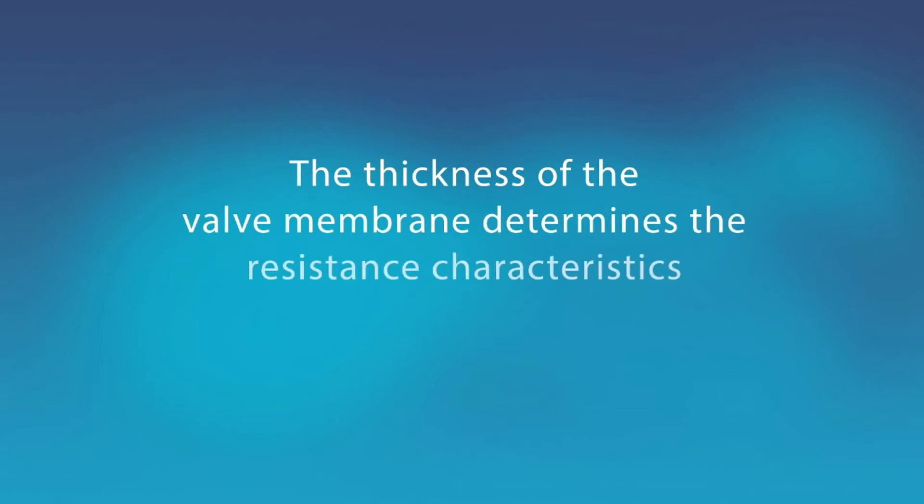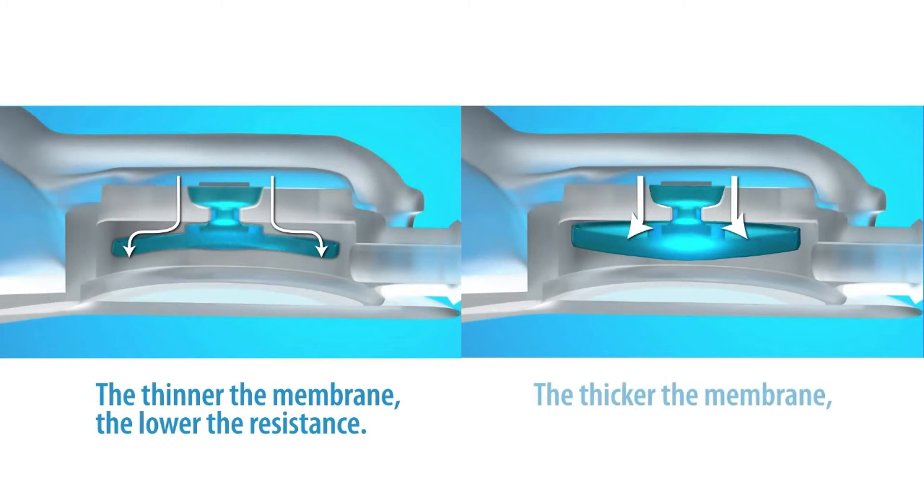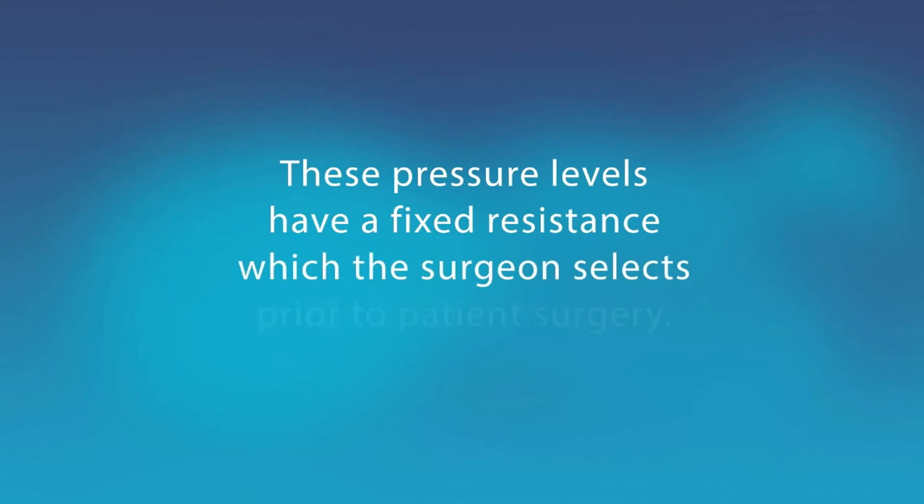The thickness of the valve membrane determines the resistance characteristics of the valve. The thinner the membrane, the lower the valve resistance; the thicker the membrane, the higher the valve resistance. These pressure levels have a fixed resistance which the surgeon selects prior to patient surgery.